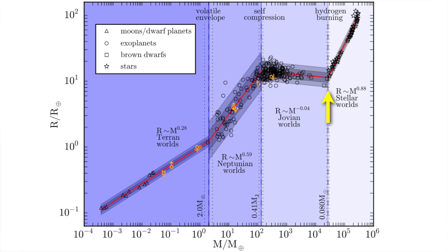The last transition is at 8% of solar mass. Above this limit, the core of the object will ignite hydrogen fusion and the object shines as a star.